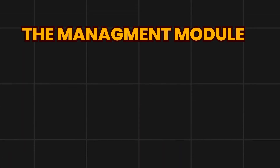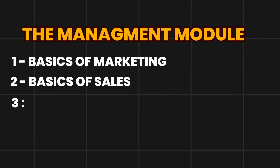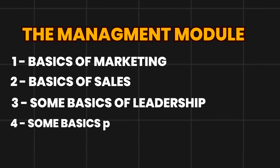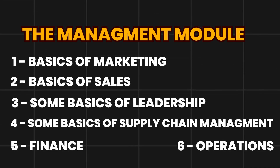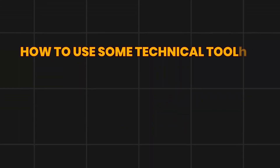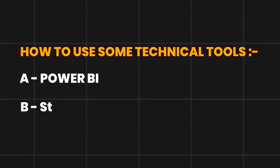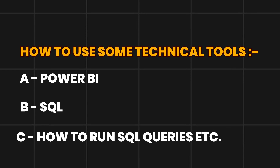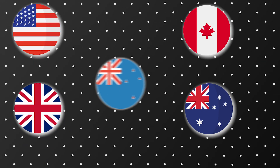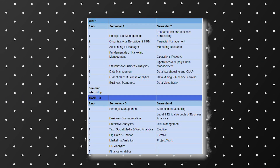What you learn in your one year of MSc Business Analytics is a blend of management and technical modules. The management modules include basics of marketing, sales, leadership, supply chain management, and finance operations. On the technical side, you will learn tools like Power BI and SQL, including how to run SQL queries. This is what the modules look like for MSc Business Analytics, no matter which destination — US, UK, Canada, or elsewhere.